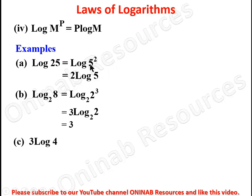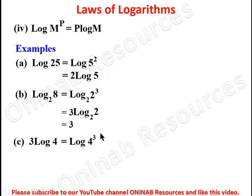The reverse form of this law states that p log m equals log m raised to power p. So 3 log 4 becomes log 4 to the power of 3, and 4 to the power of 3 is 64, giving us log 64 as the final answer.